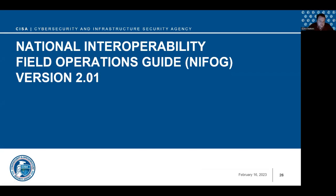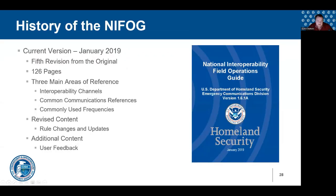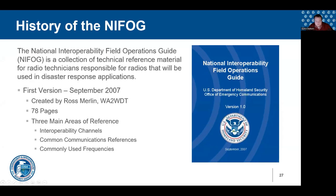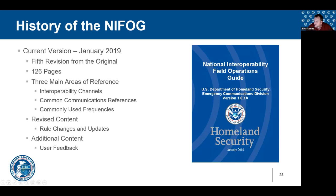Now let's talk about our field operations guides. Many of you are probably familiar with the National Interoperability Field Operations Guide — the NIFOG. Version 1.0 came out in September 2007, created by Ross Merlin, who has since retired from DHS and is working in the private sector. A lot of individuals put in time and effort to grow it from 78 pages to 126 pages. The book included interoperability frequencies, common references for wiring different connector types, frequency bands, and lots of telephone numbers. Revisions to version one were mostly about rule changes and updates with small content additions.